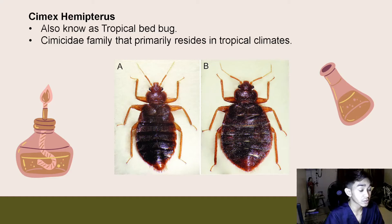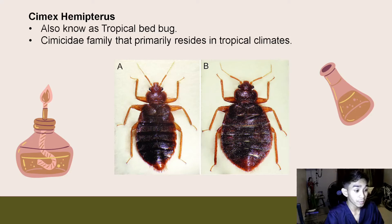The next species will be Cimex hemipterus, also known as tropical bedbugs. They belong to the Cimicidae family and primarily reside in a tropical climate. They are reddish-brown and they get darker after a blood meal. Tropical bedbugs can only survive in tropical weather.